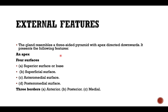Now let us move on to the external features. The parotid gland is a three-dimensional structure that resembles a three-sided pyramid with the apex directed downwards. It has four triangular surfaces: the superior surface or base, the superficial surface, the anteromedial surface, and the posteromedial surface. It also has three borders: the anterior border, the posterior border, and the medial border.